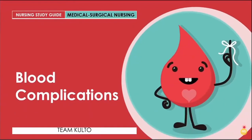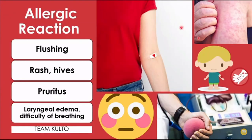First, we have the allergic reaction. This is caused by sensitivity to plasma proteins of the donor, or the donor's antibody which reacts with the recipient's antigen. What we need to assess: expect flushing, rash or hives, pruritus, and laryngeal edema or difficulty breathing. These are the signs and symptoms of the allergic reaction.